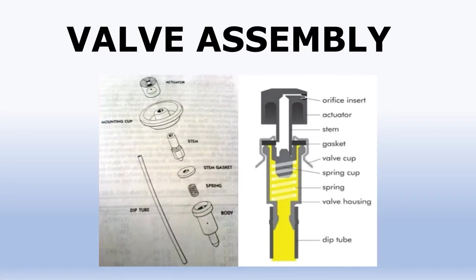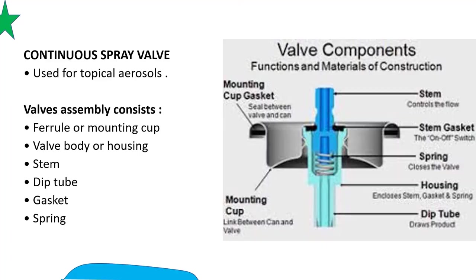The valve assembly consists of, from top to bottom: an orifice insert, actuator stem, gasket, valve cup, spraying cup, valve housing, and dip tube. The continuous spray valve is used for topical aerosols.